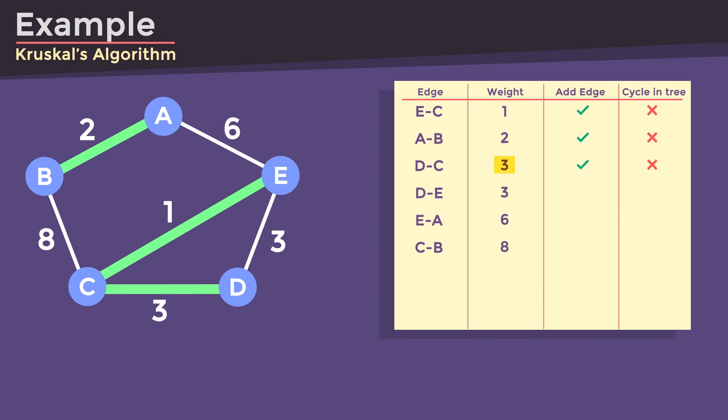So, adding ED will form a cycle and is not allowed. The next possible edge that we can add is EA.